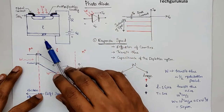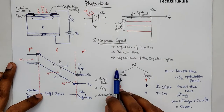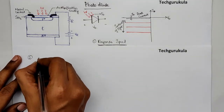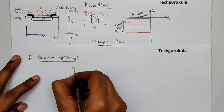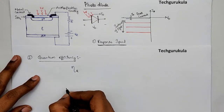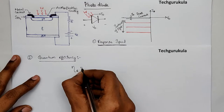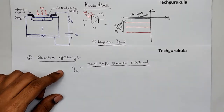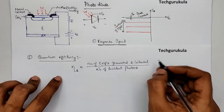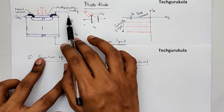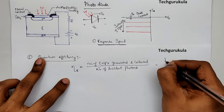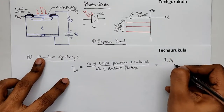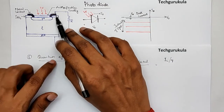Hence, the PIN diode is most commonly used as a photodetector. The second important parameter is quantum efficiency, denoted by eta (η or η_Q). It is defined as the number of electron-hole pairs generated and collected divided by the number of incident photons. The number of electron-hole pairs collected can be found from the photocurrent I_L divided by charge Q, and the number of incident photons is the incident power P_in divided by the photon energy hν.